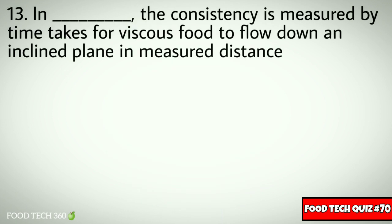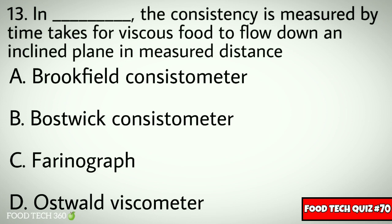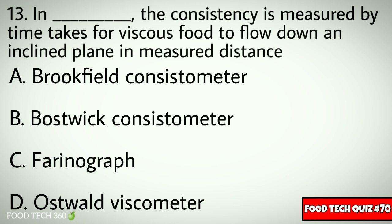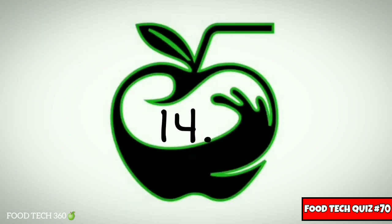Q13. In dash, the consistency is measured by the time it takes for viscous food to flow down an inclined plane a measured distance. Options: A. Brookfield consistometer, B. Bostwick consistometer, C. Farinograph, D. Ostwald viscometer. Correct answer: B. Bostwick consistometer.